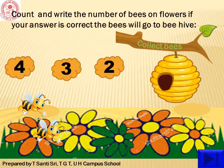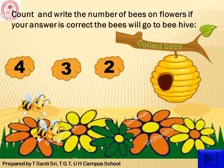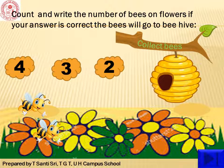Children, now count and write the number of bees on flowers. If your answer is correct, the bees will go to the beehive. Here, how many bees are there? One, two. So, click on the number two.